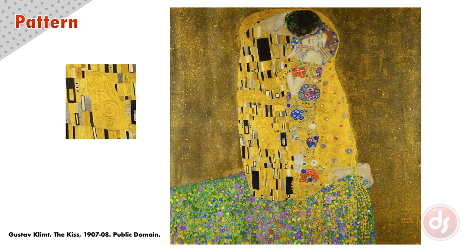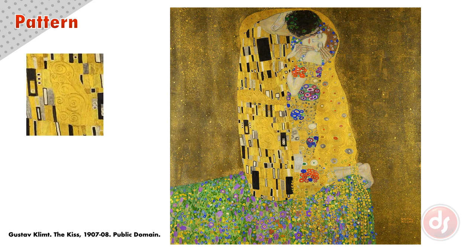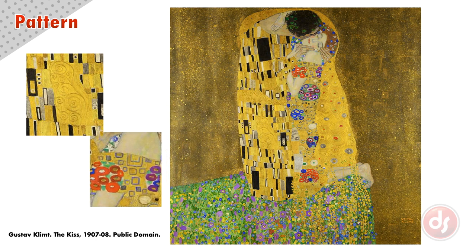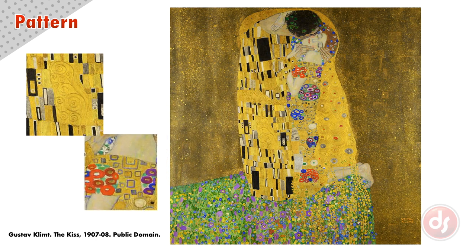But notice within the male figure's pattern there are a few curvilinear lines, and in the female's pattern there are a few squares. This hints at their connection and helps unify them. Here, Klimt is using pattern not only to create visual interest, but also as a narrative device to help tell his story.